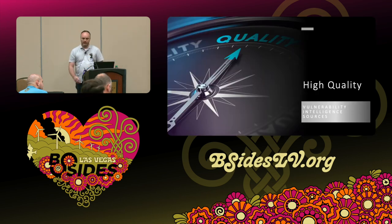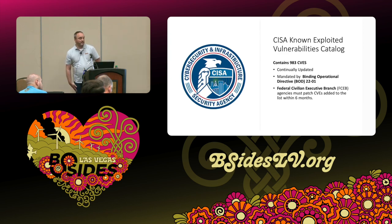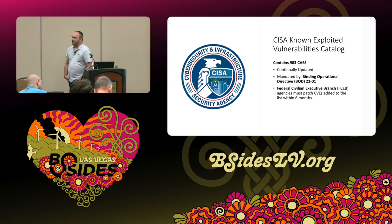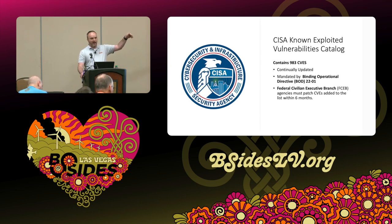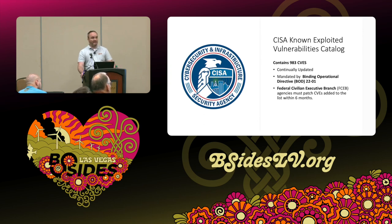First, we'll start with the high-quality data. CISA's Known Exploited Vulnerabilities Catalog — if you work in the federal government, you know about this one. As of this morning, it contains 983 CVEs. The binding operational directive was BOD 22-01. The guts of it is that when a CVE is added to this list, the federal government has six months from the date it's added to get it remediated off their network. What I like to tell people is that this is a good starting point. If you don't have a vulnerability intelligence program, start with the KEV list and make sure you have all of those removed from your network first, then build out a more substantial list.